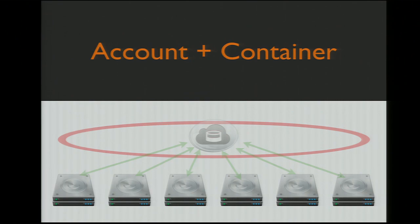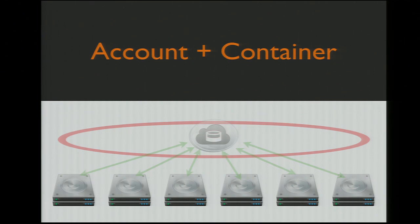The third major piece are the account and container servers. These are responsible for maintaining listings of the things underneath them. Swift's data is organized in a fairly flat namespace, delineated into accounts — that's how it handles multi-tenancy. Accounts store a listing of each container in that account, and containers store a listing of the objects in that particular container. Accounts and containers also store metadata like total bytes stored and total number of objects. For the most common requests — read requests — these are completely out of the data path and are not a limitation on request scalability.